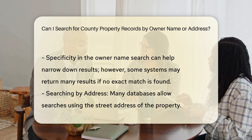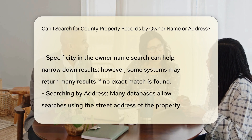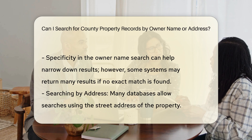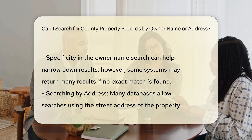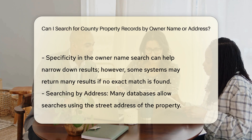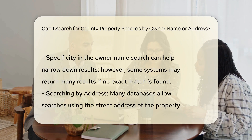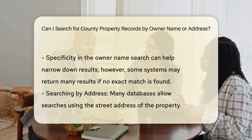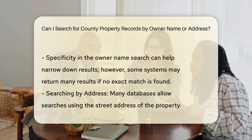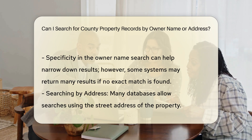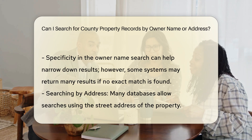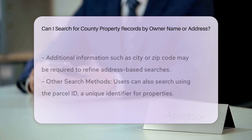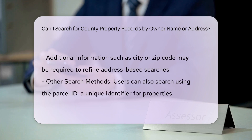Wildcard searches: some systems allow you to use wildcards to broaden your search. For example, you can use an asterisk to match any string of characters, such as Smith*, to find Smith, Smithson, etc. Being as specific as possible helps narrow down the results. If the exact match is not found, some systems may return up to 500 search results.